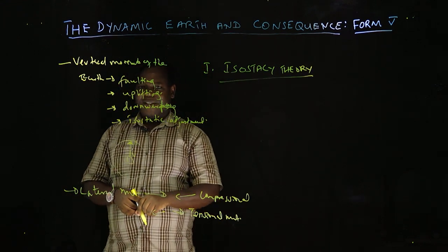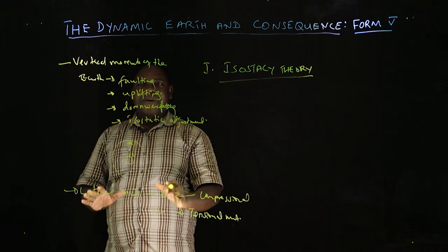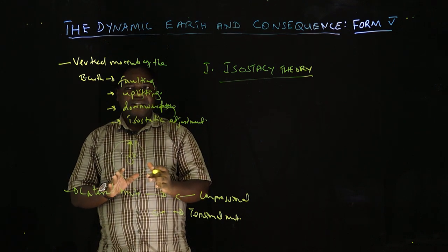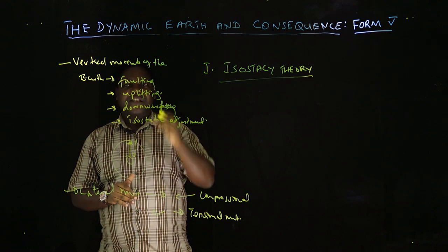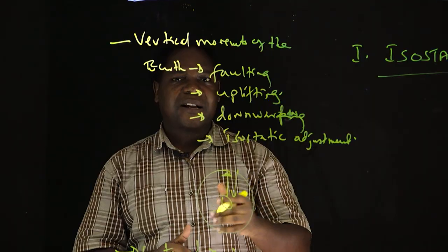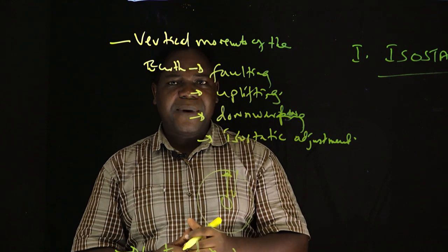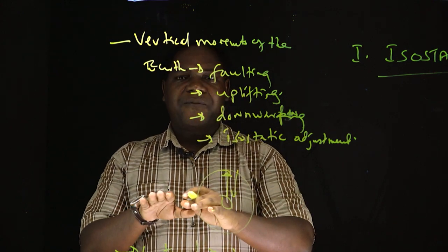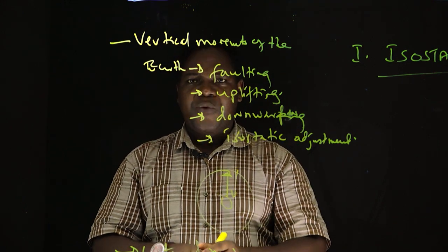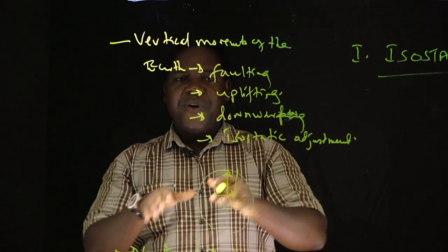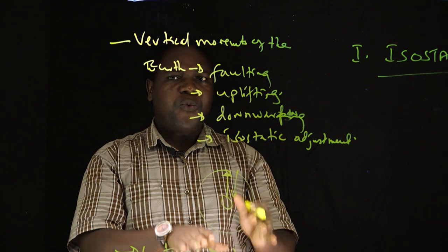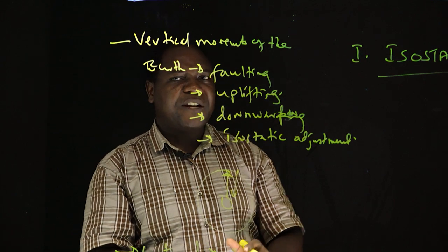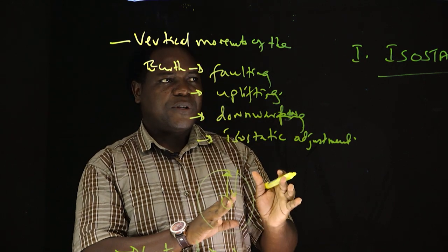Isostasy is there to keep the balance of the earth's material. This is a theory developed in those days by a geologist known as Clarence Dutton. The aim of this person was to verify why we have the highlands and lowlands all the time. We have denudation taking place on the highlands and deposition taking place on the lowlands, but why do these parts remain?